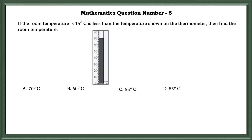Mathematics Question No. 5: If the room temperature is 15 degree less than the temperature shown on the thermometer, then find the room temperature. The temperature shown on the thermometer is 70 degree. And 70 degree minus 15 degree is equal to 55 degree. So our answer is 55 degree.